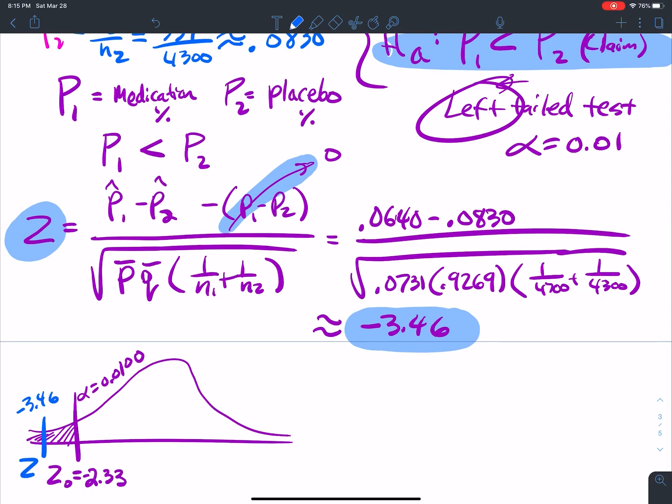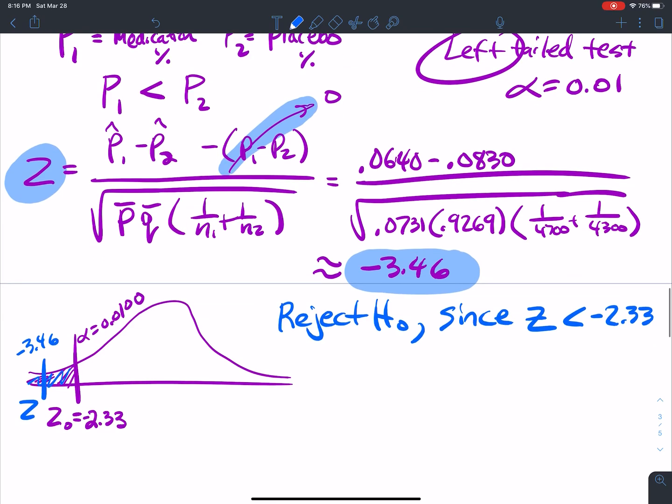So that gives me something that's in the rejection region. So I reject the H0 since my z value that I found is less than the negative 2.33 critical value. It's a left-tailed test.